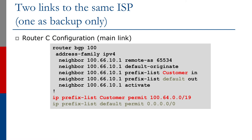Looking at router C on the upstream provider side, all the upstream provider does is originate a default route, set up a prefix list to send that default outbound to the customer, and create another prefix list to allow the customer's slash 19 address block inbound. Router D has an identical configuration — default originate, allowing the customer prefix in, and allowing the default route outbound. The upstream provider's configuration is very simple and does not need to change if the customer swaps which link is primary or backup.